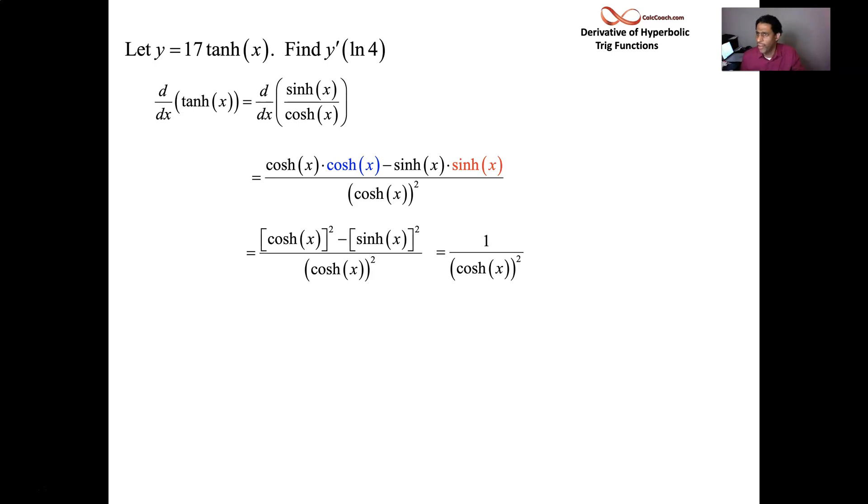So this is 1 over hyperbolic cosine squared. And let's go ahead and call it what you would think, hyperbolic secant squared. So just like with tangent, tangent's derivative is secant squared. Hyperbolic tangent's derivative is hyperbolic secant squared.